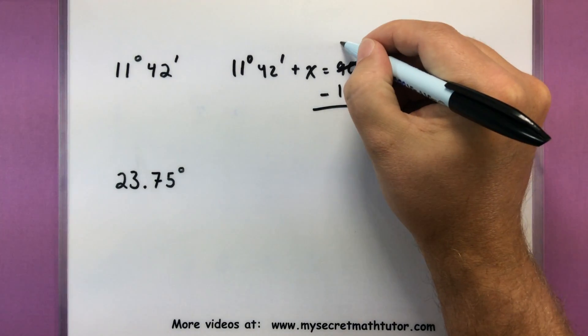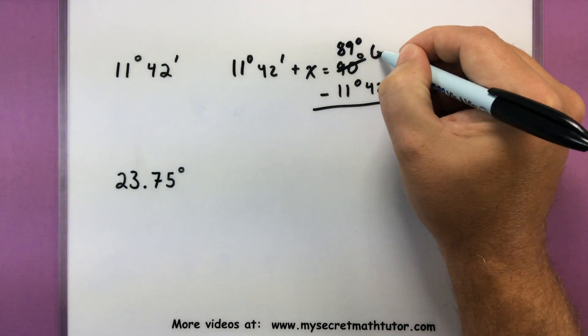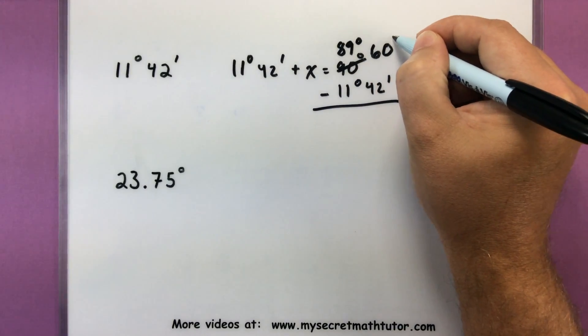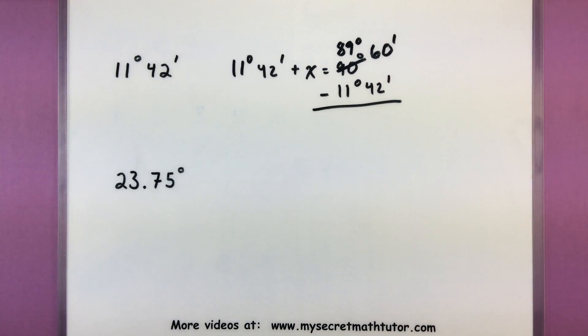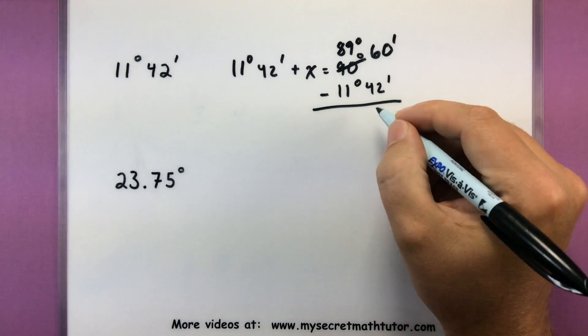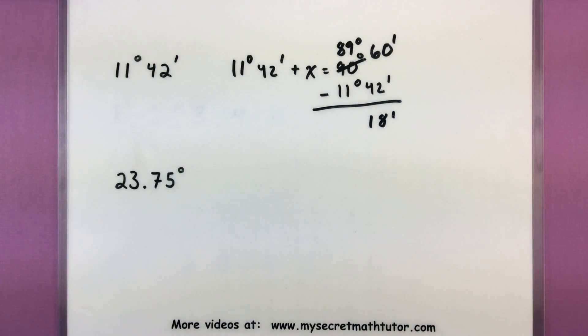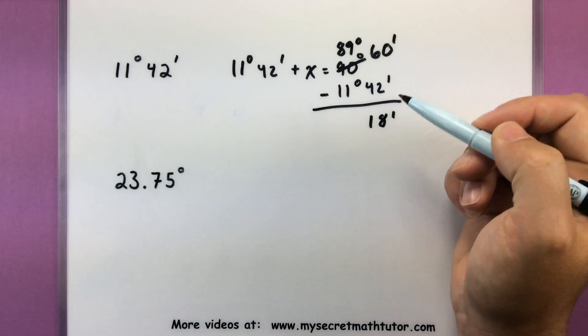So I'm going to call this 89 degrees. And then what did I do with that extra full degree? I'm going to turn it all into minutes. Now I can actually run through that subtraction process and see what I get. So 60 minus 42, that'll be 18 minutes, looks nice.